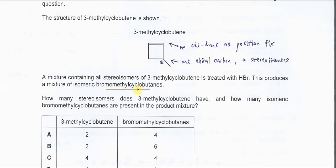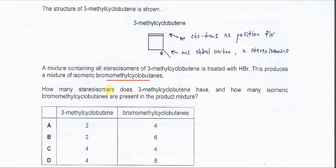Okay, later we discuss this one. How many stereoisomers does 3-methylcyclobutene have and how many isomeric bromomethylcyclobutenes are present in the product mixture? First, let's figure out the 3-methylcyclobutene. How many stereoisomers it has?